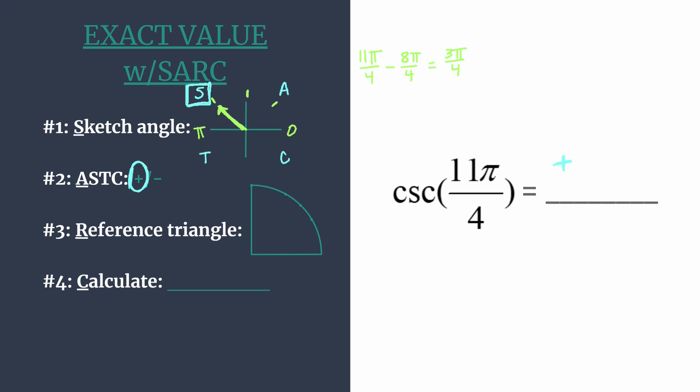So the reference angle is the amount of rotation from the terminal side to the x-axis. So we rotated 3π/4. If you rewrite π as 4π/4, that can help. You can easily see that we have a reference angle of 1π/4. So that corresponds to the 45, 45, 90 special right triangle. Because π/4 is the same thing as 45 degrees.